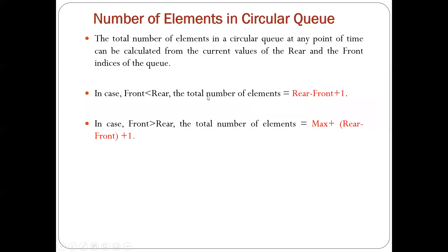Now we will see two formulas to calculate the number of elements in the circular queue. The first case: whenever your front is less than the rear, the total number of elements present in the queue is calculated with the formula rear minus front plus 1. In the second case, when the front is greater than the rear, the total number of elements is equal to max plus rear minus front plus 1, where max is the size of the queue.